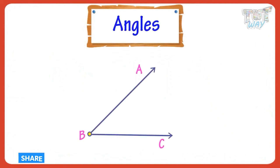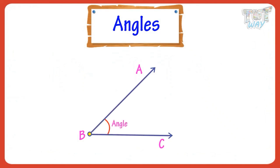We learned that angles are a shape formed by two straight lines diverging from a common point. Here, B is the vertex of the angle. A, B and B, C are legs of the angle.